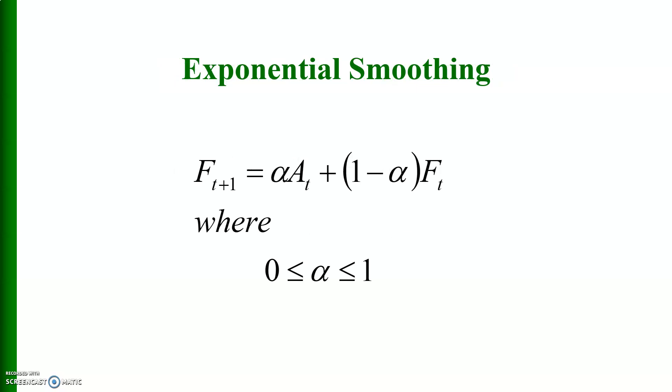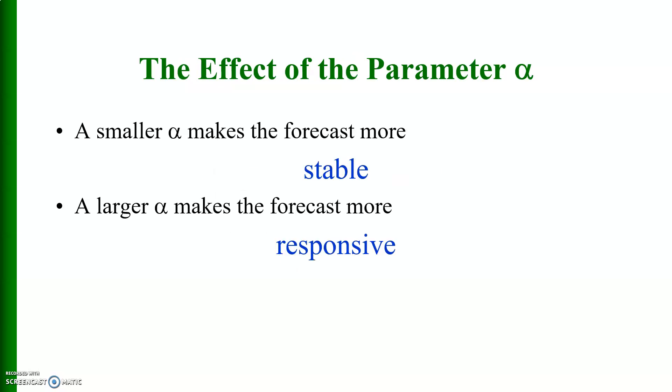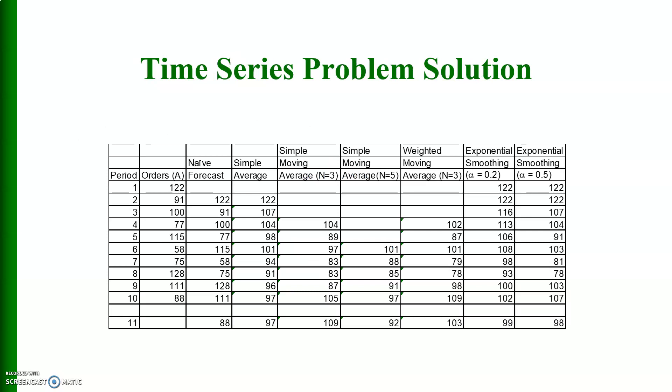And this is the exponential smoothing formula, where alpha is greater than or equal to 0 and less than or equal to 1, so it ranges between 0 and 1. The effect of the parameter alpha: a smaller alpha makes the forecast more stable, a larger alpha makes the forecast more responsive.